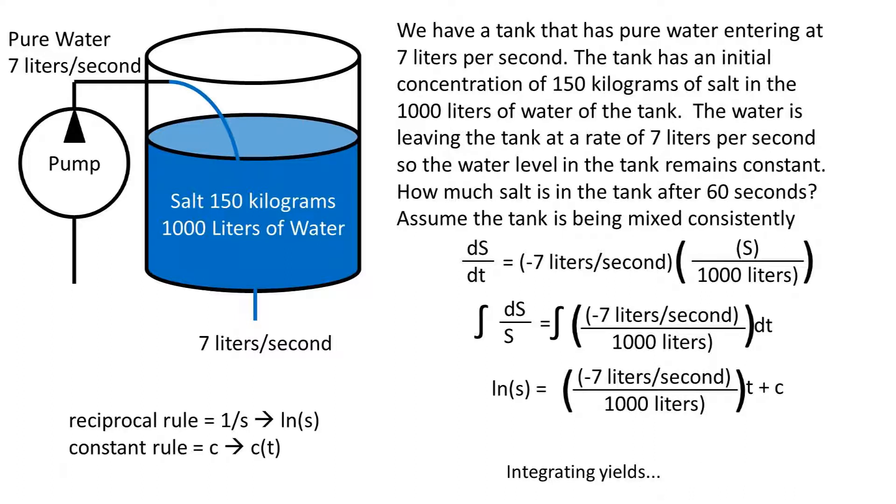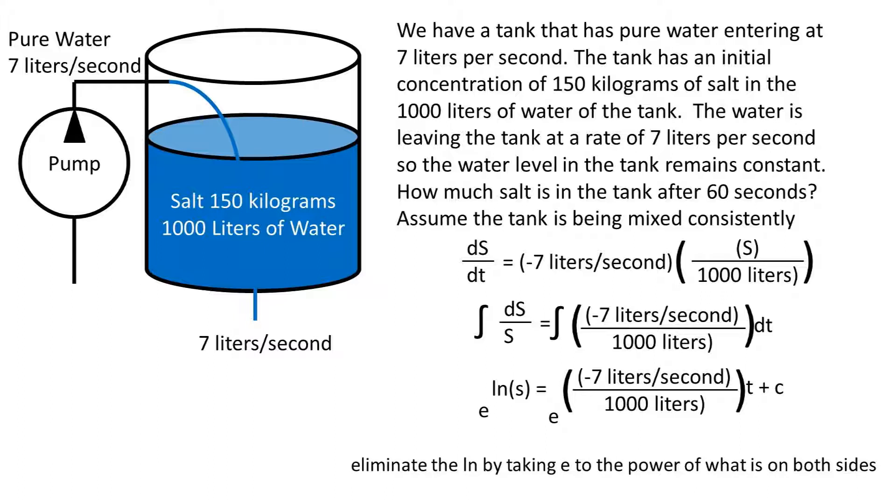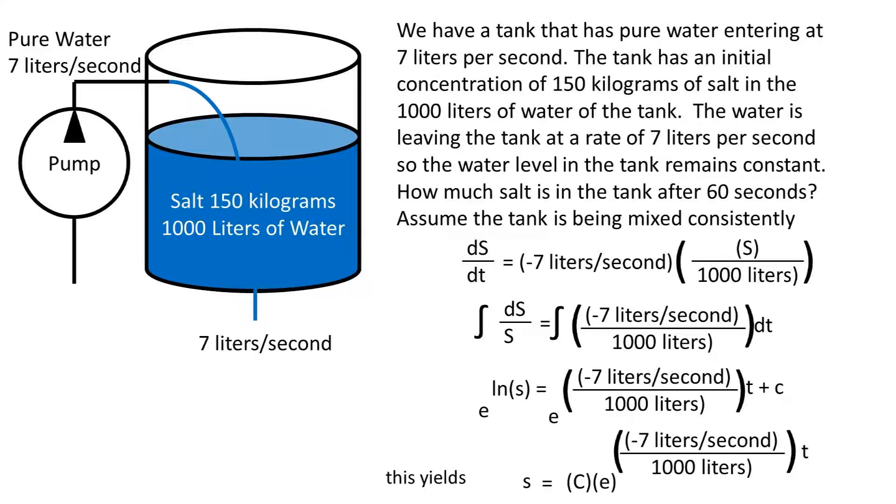Using the reciprocal rule and the constant rule, this yields the natural logarithm of s equals negative 7 liters per second, divided by 1,000 liters, times time. Now we need to eliminate the natural logarithm on the s side by taking e to the power of what is on both sides. This yields the following equation.